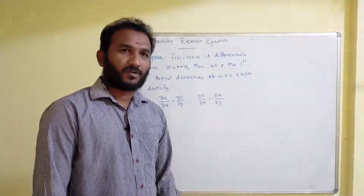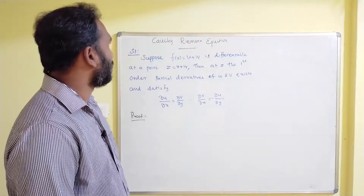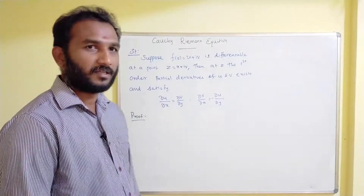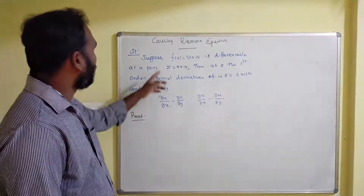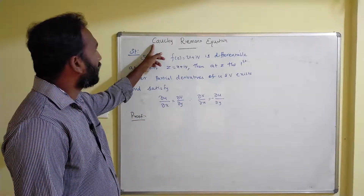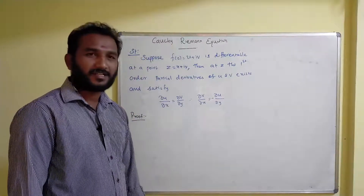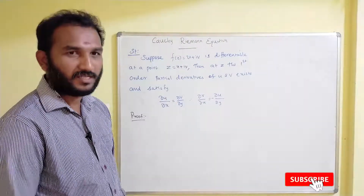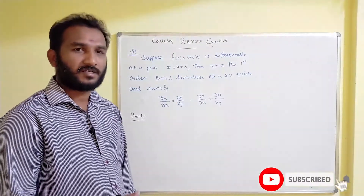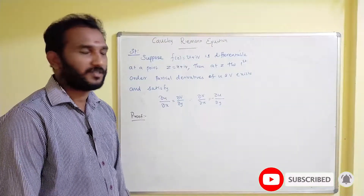Hello everyone, welcome to another video lecture of Mathematics Solution channel. Today we are going to discuss about the Cauchy-Riemann equation, that is the CR equation. We have two types: one is Cartesian coordinate and another one is polar coordinate.